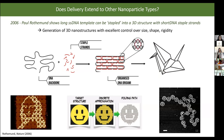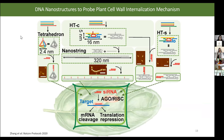We've made several nanostructures to test the structure-function relationship of internalization across the plant cell wall. Specifically, we've made small tetrahedron nanoparticles, hairpin tile structures measuring 5 by 16 nanometers, and hairpin tiles assembled into nanostrings measuring 5 nanometers by 320 nanometers — resembling in form factor the size of a single-walled carbon nanotube. Because they're DNA-based, we can attach cargo at defined loci, such as neutravidin protein onto the tip, onto ten parts of the nanostring, or onto the center, as validated by AFM.